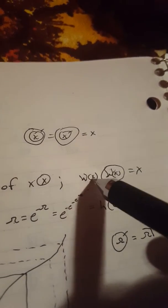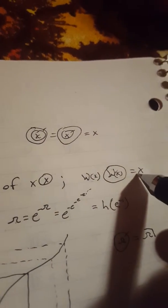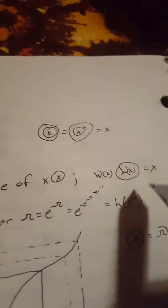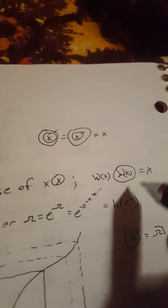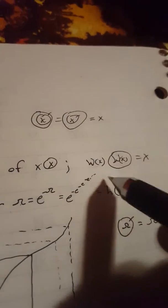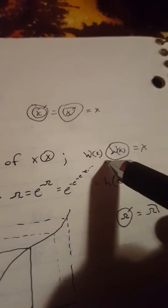So, Lambert W of x times e to the Lambert W of x gets you back to x. This is valid over the whole complex plane. Really interesting function. It comes up in all sorts of engineering solutions to real practical problems.